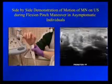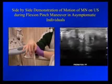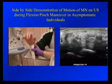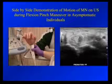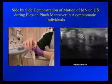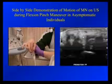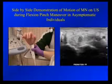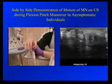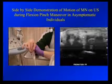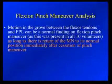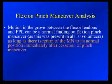The median nerve dives deep into the groove between the flexor pollicis longus and the flexor digitorum tendons. Upon return of the wrist to neutral, the median nerve very spontaneously reduces. Motion in the groove between the flexor tendons and the flexor pollicis longus is a normal finding.